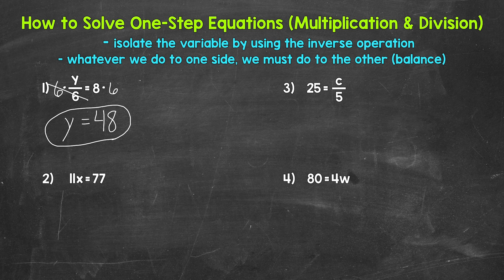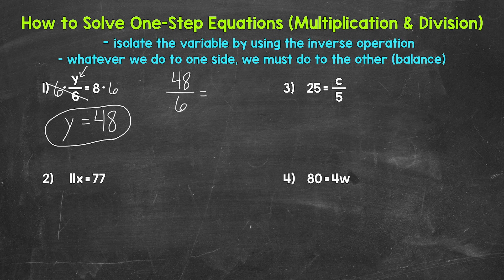So y equals, and then on the right side of the equation, we have 8 times 6, which is 48. So y equals 48 — that's our solution. We can always check to see if we are correct — just plug in what we got and see if it works. Plug in 48 for y: 48 divided by 6 equals 8. 48 divided by 6 does equal 8, so we are correct. y equals 48.